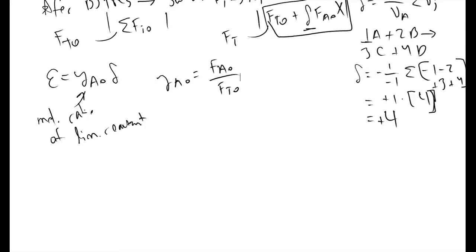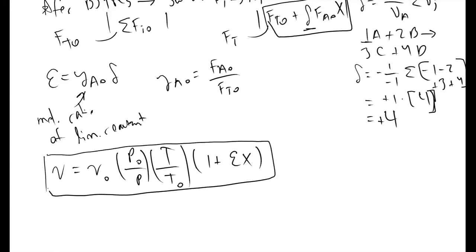For flow reactors, our volumetric flow rate V is equal to our inlet volumetric flow rate V0 times P0 over P, your inlet pressure divided by your outlet pressure, times your temperature at your outlet divided by your temperature at your inlet, times 1 plus epsilon times x. And we only need to worry about this kind of stuff when we are working with gases only.